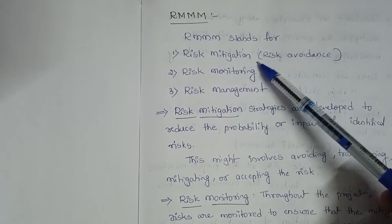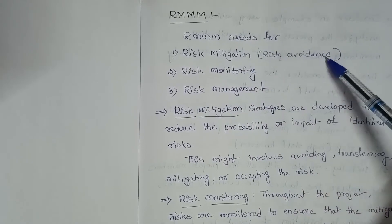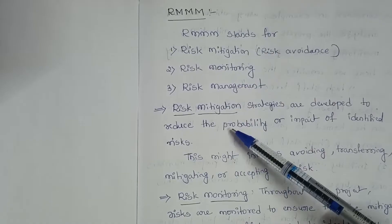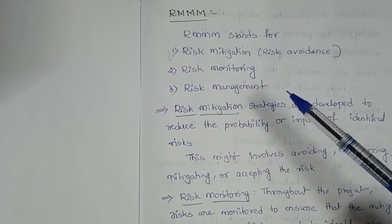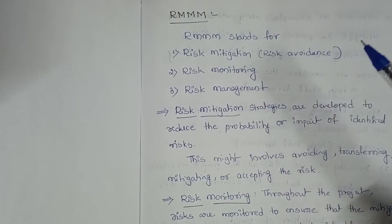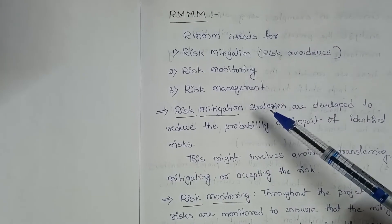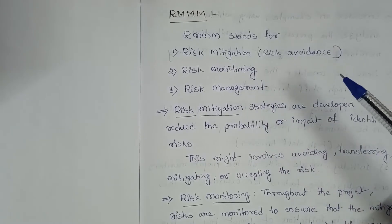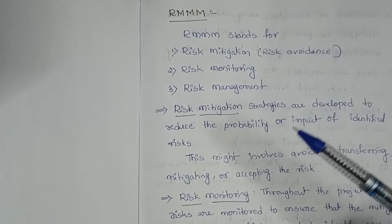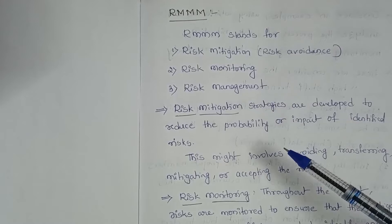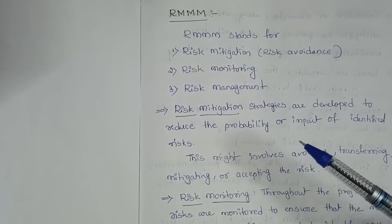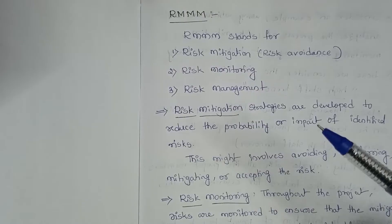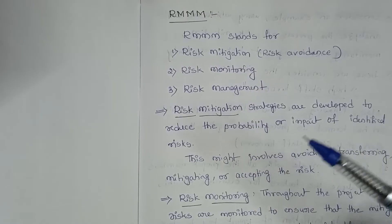Another name for risk mitigation is risk avoidance — in one word, we can say avoiding the risk. Monitoring means a deep insight into the continuous process, and coming to management, we can consider different strategies to manage the particular risk.